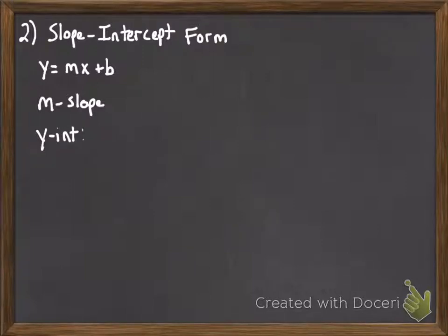This is called slope-intercept form because when it's in this format, not only can we read off the slope really easily, we can also read off the y-intercept.